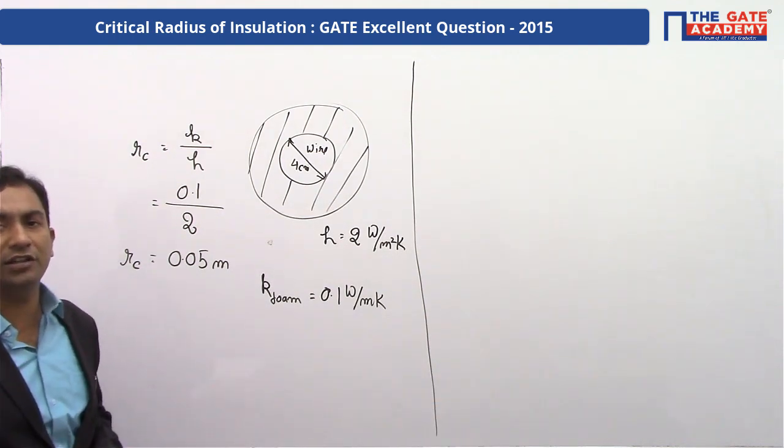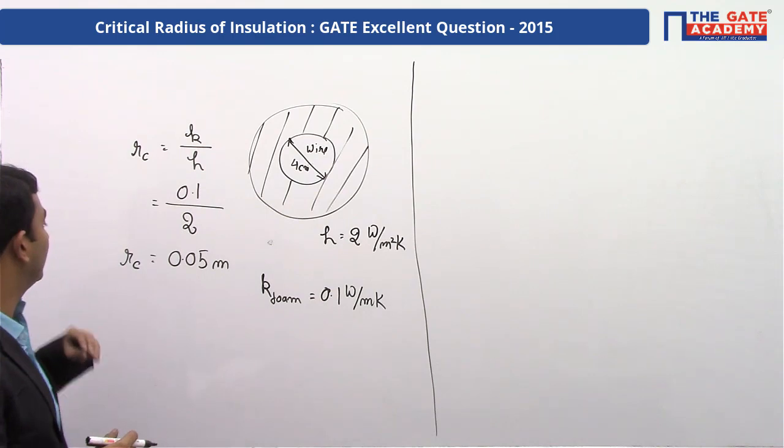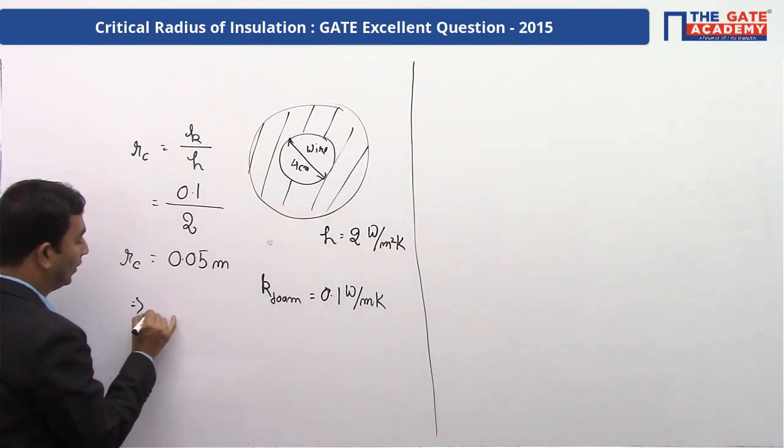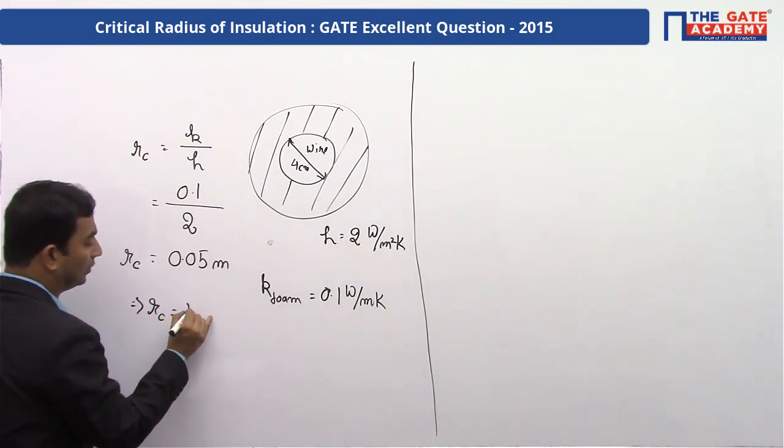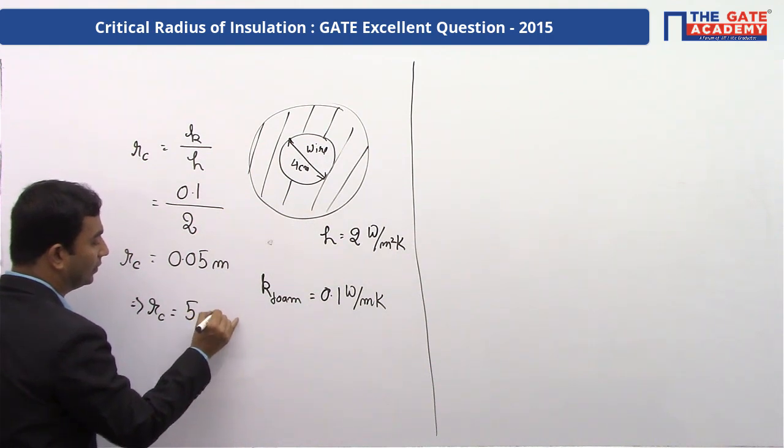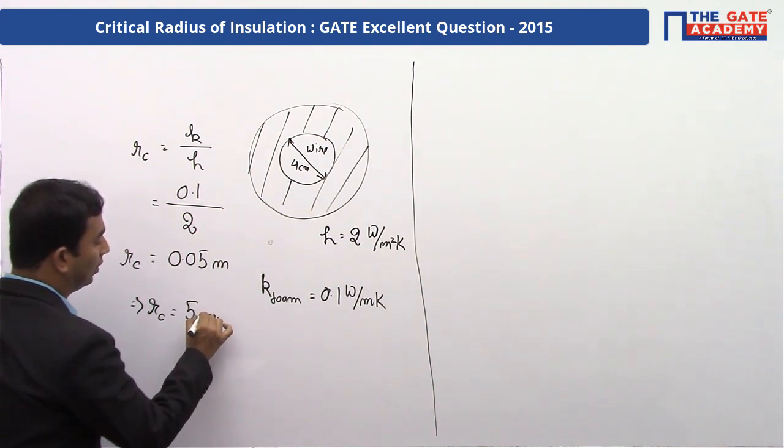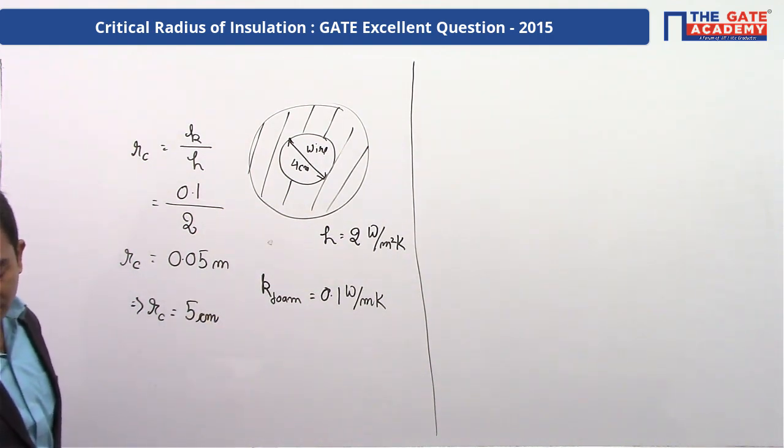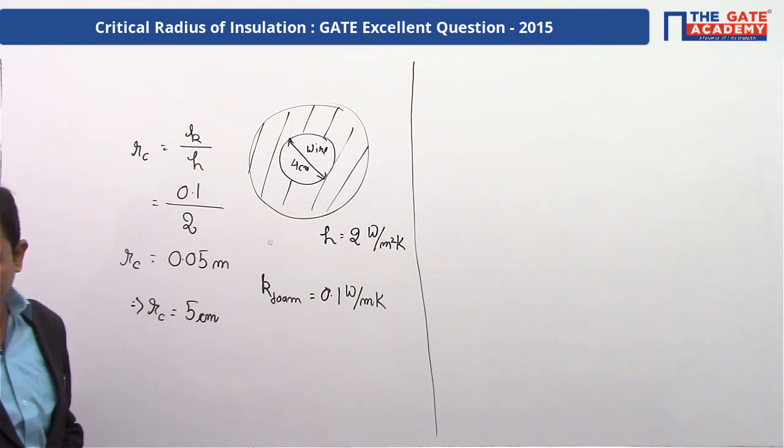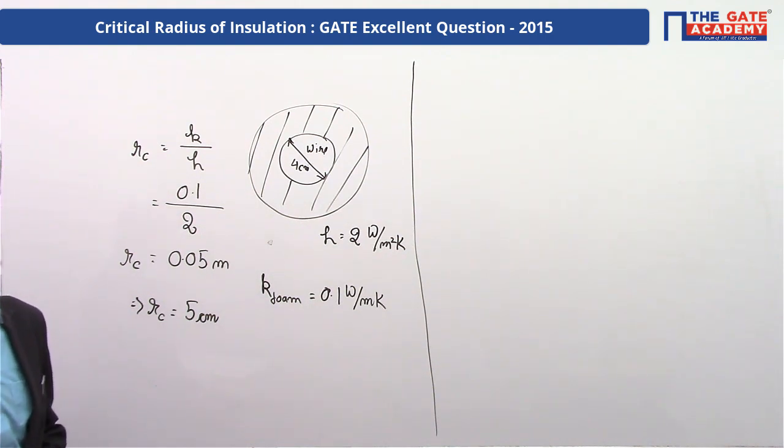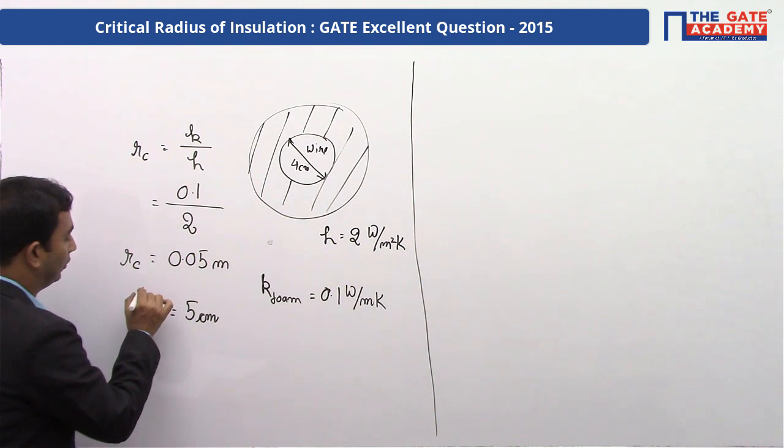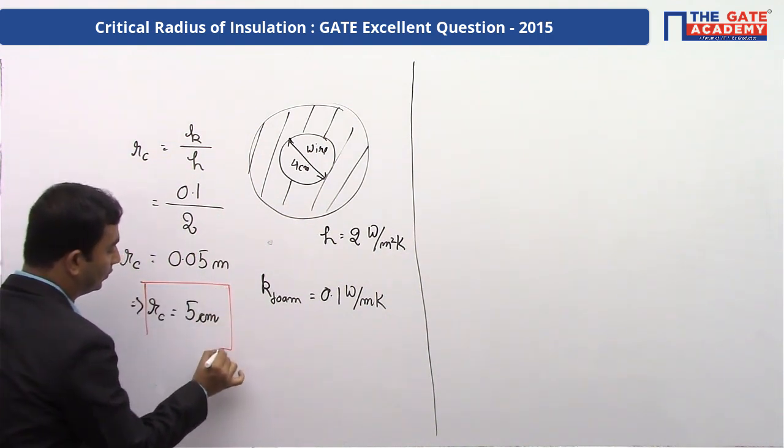Now, in the question, the answer is asked in centimeter. So, if we convert it into centimeter, we have critical radius of thickness is equal to 5 centimeter, which is the given answer, which is the correct answer. rc equal to 5 centimeter.